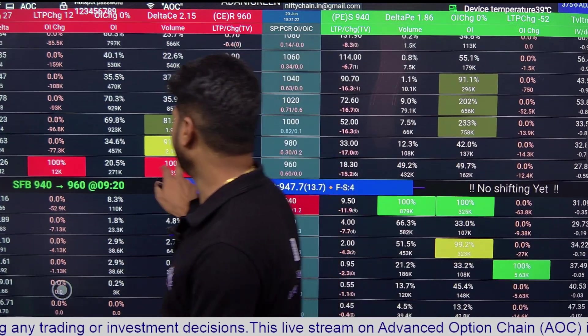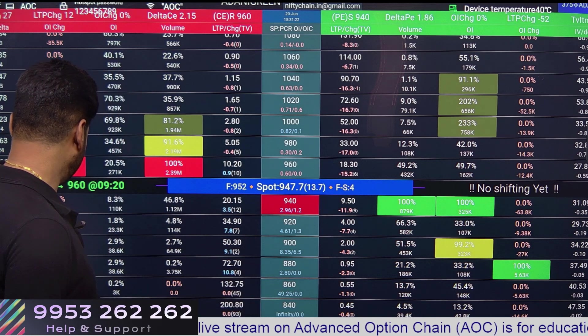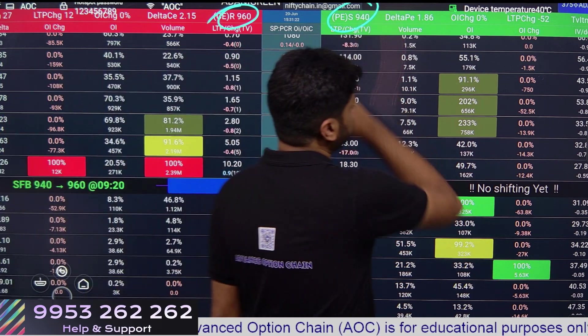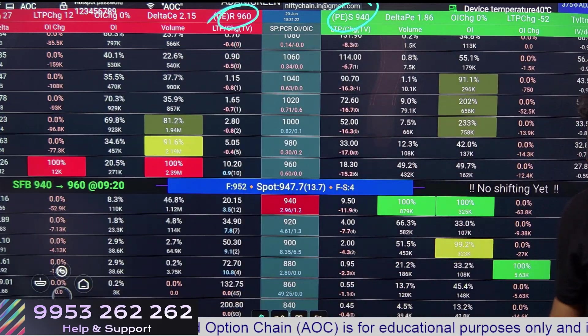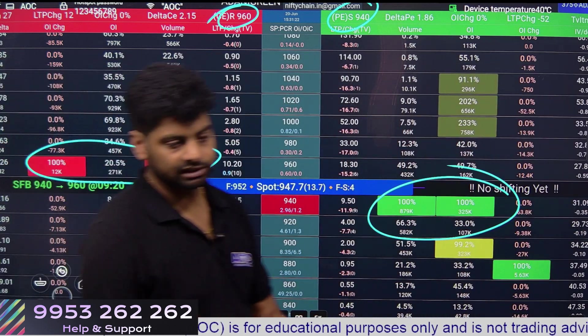So I hope you are able to identify the support and resistance. You can easily see it on AOC. Support and resistance are clearly mentioned but you need to know how that is calculated. For this video we'll keep this short.